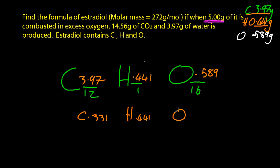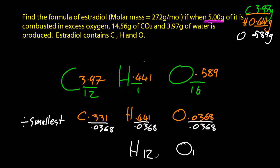Now those are horrible numbers. I need integers, so divide by the smallest, which in this case is 0.0368. And that comes out with some nice integers there.